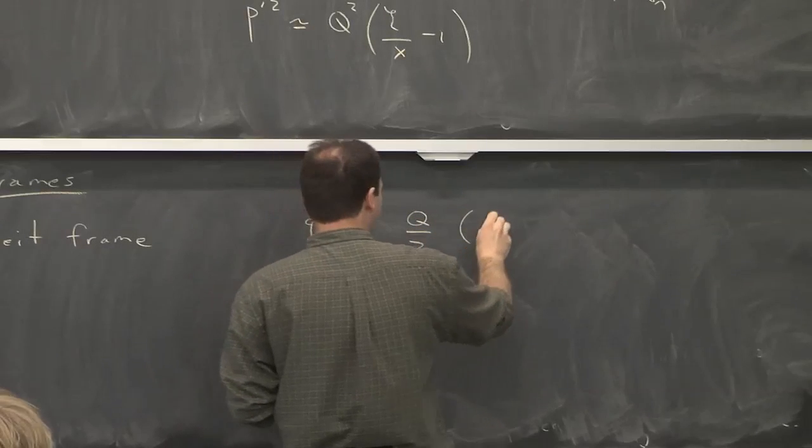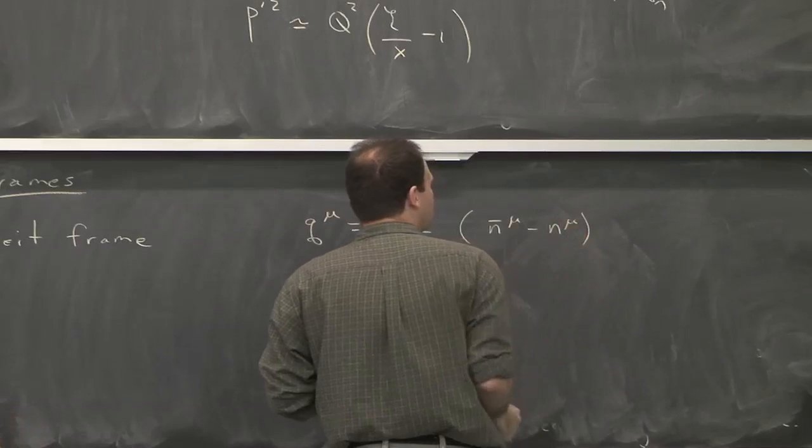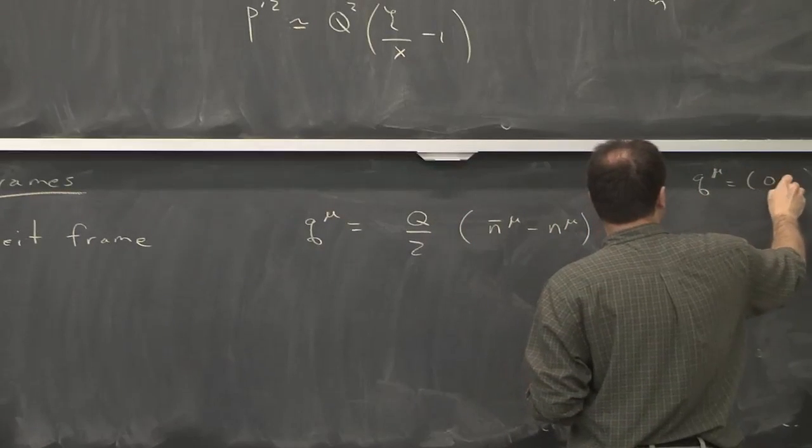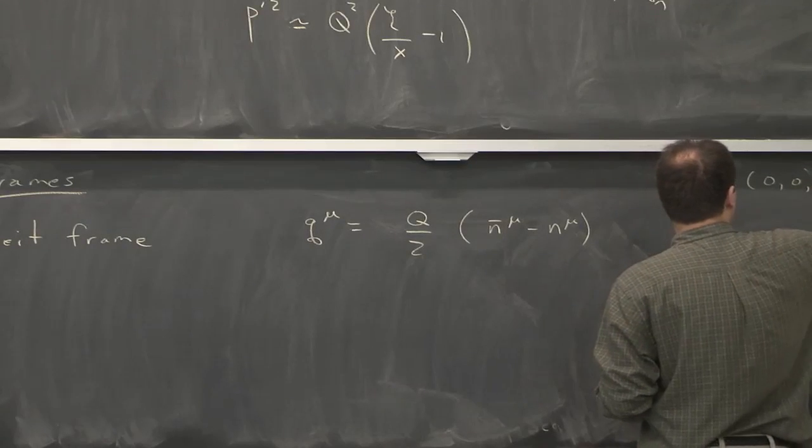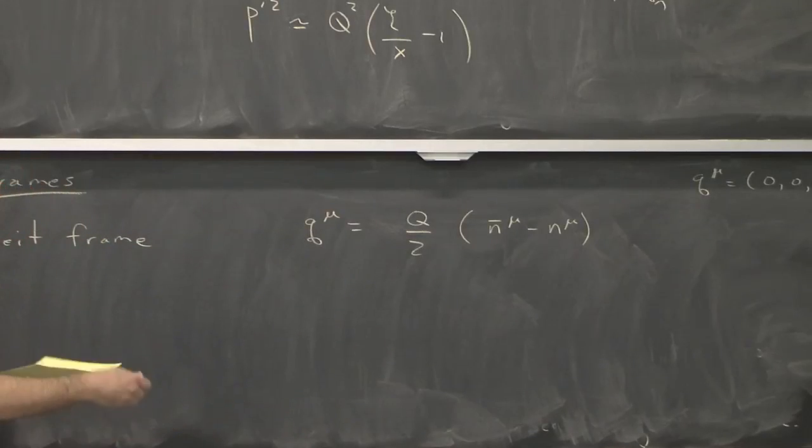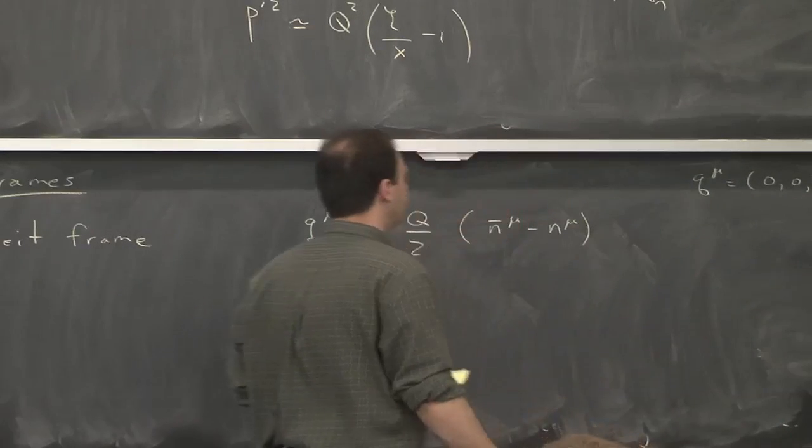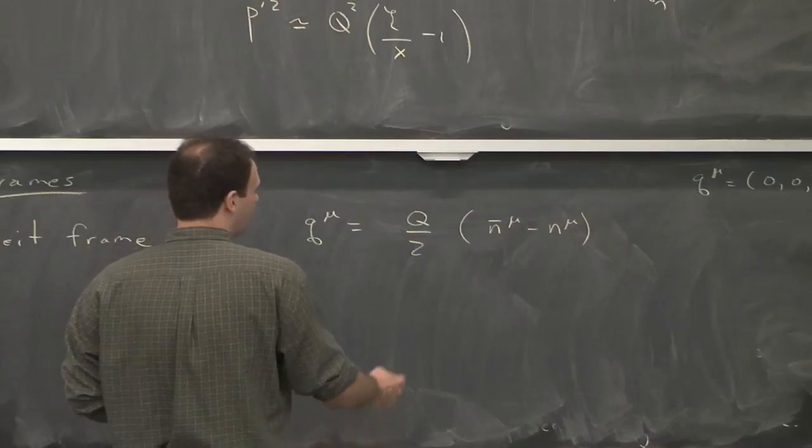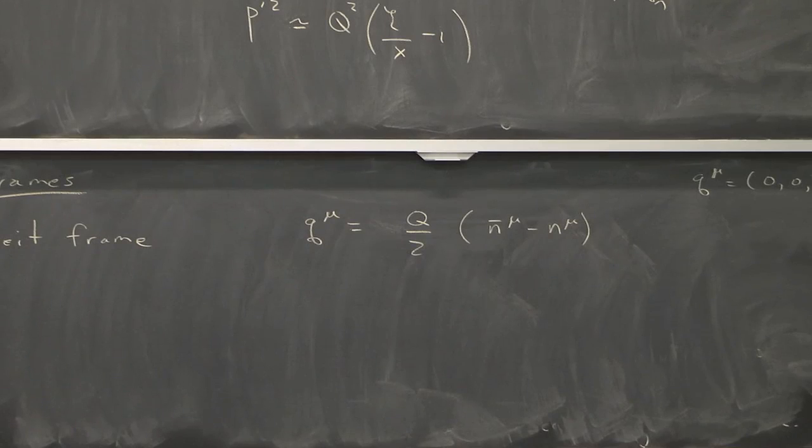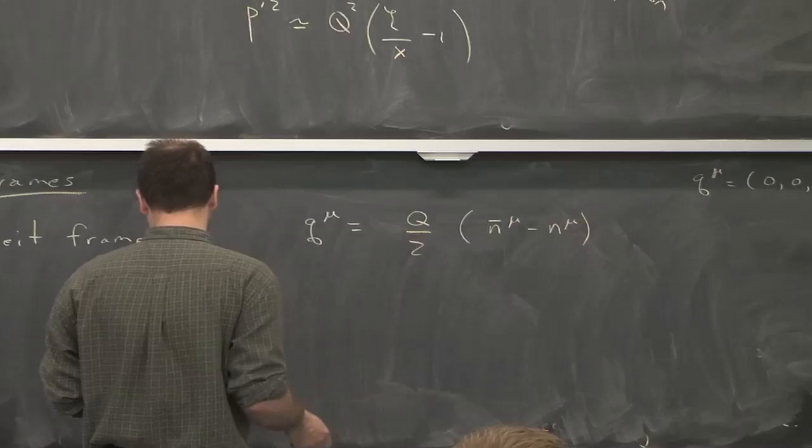So what defines this frame? This frame is defined by taking Q mu to just have a z component. Remember, it's space-like. So it has to be somewhere in the space-like column. And we can choose it such that it's entirely in the z component and nowhere else. And that's the Breit frame. If we want to write that in terms of our sort of classic decomposition of n and n bars, we can write it as a difference divided by 2. And that's giving the z component.